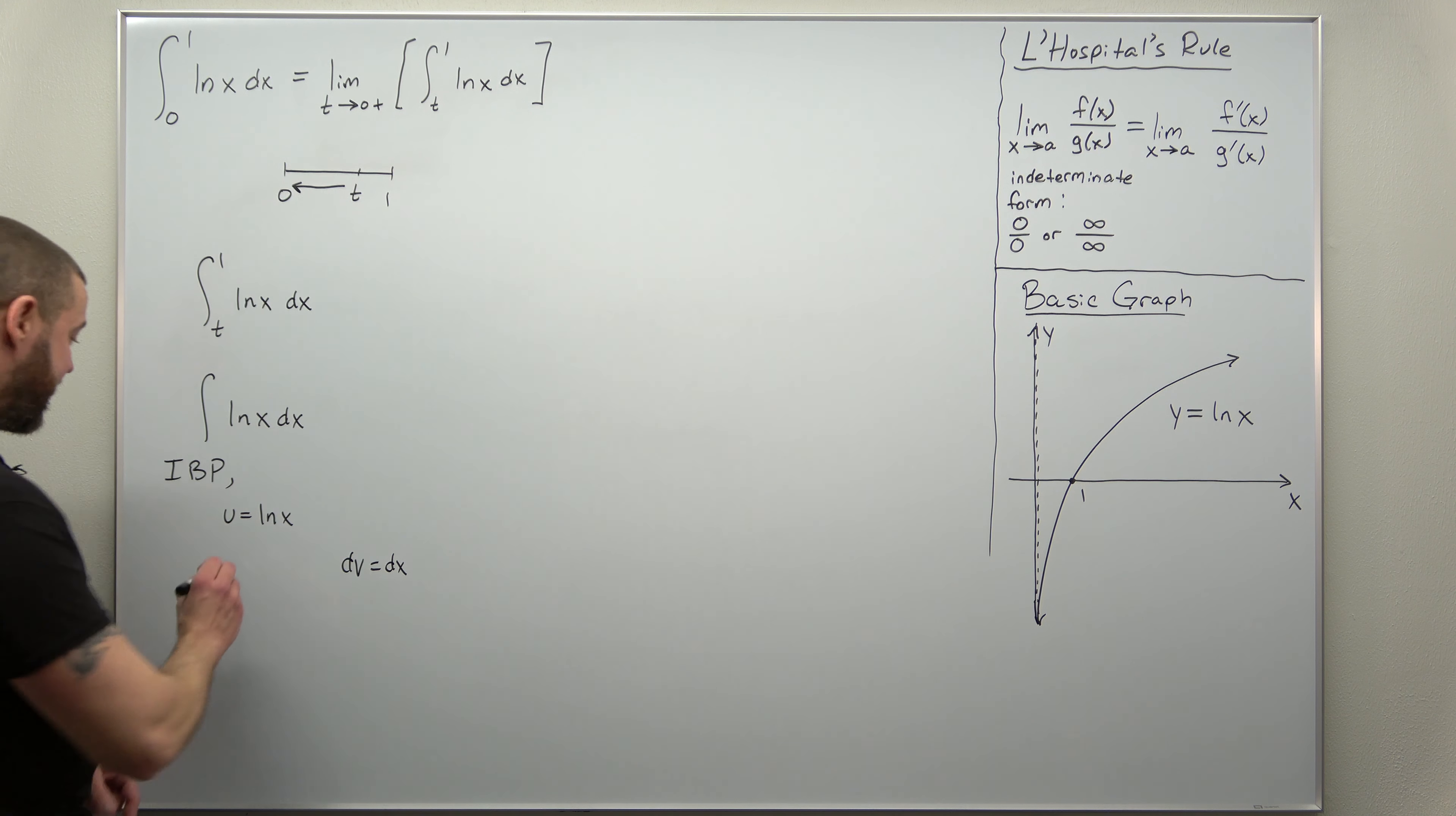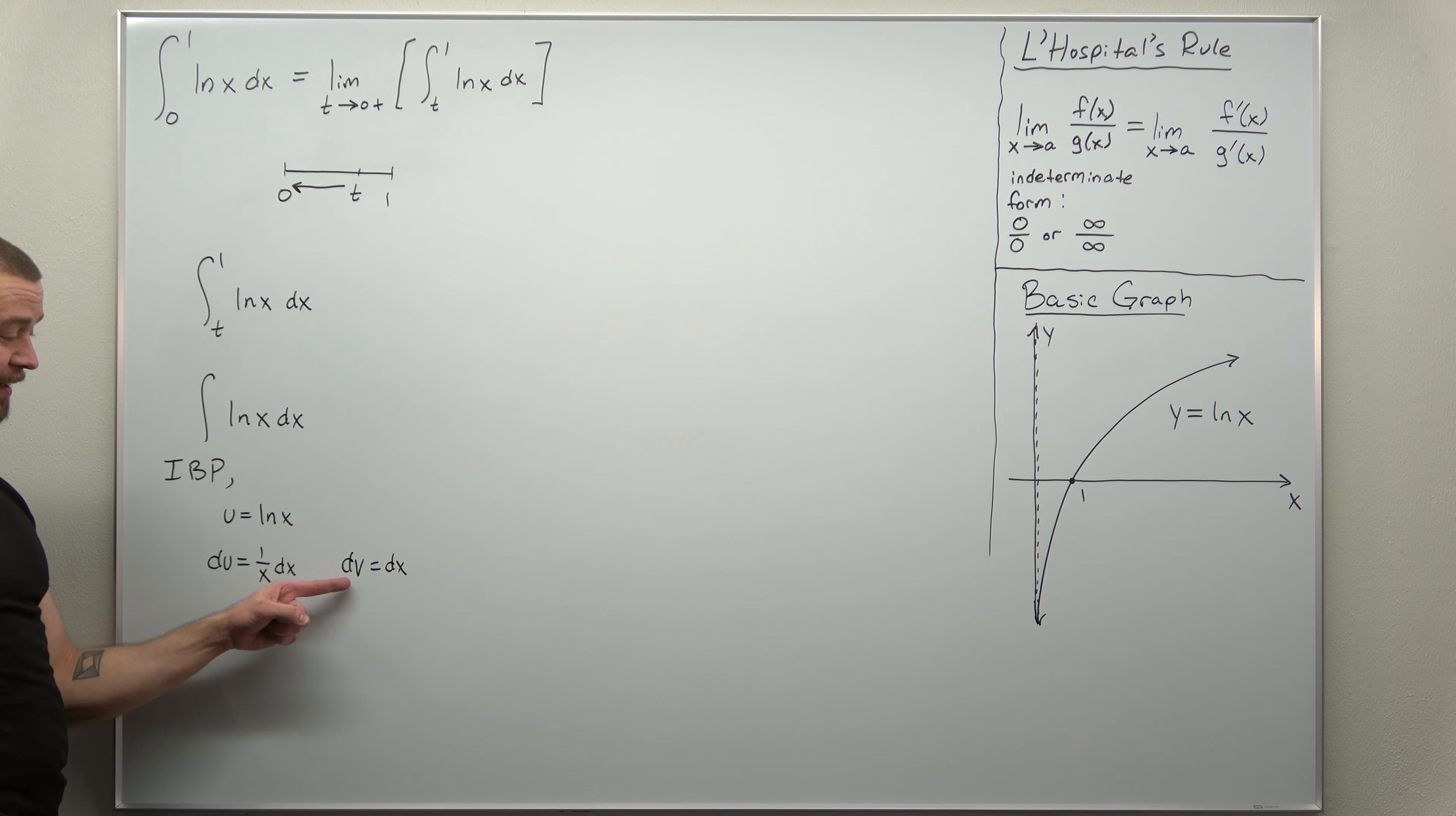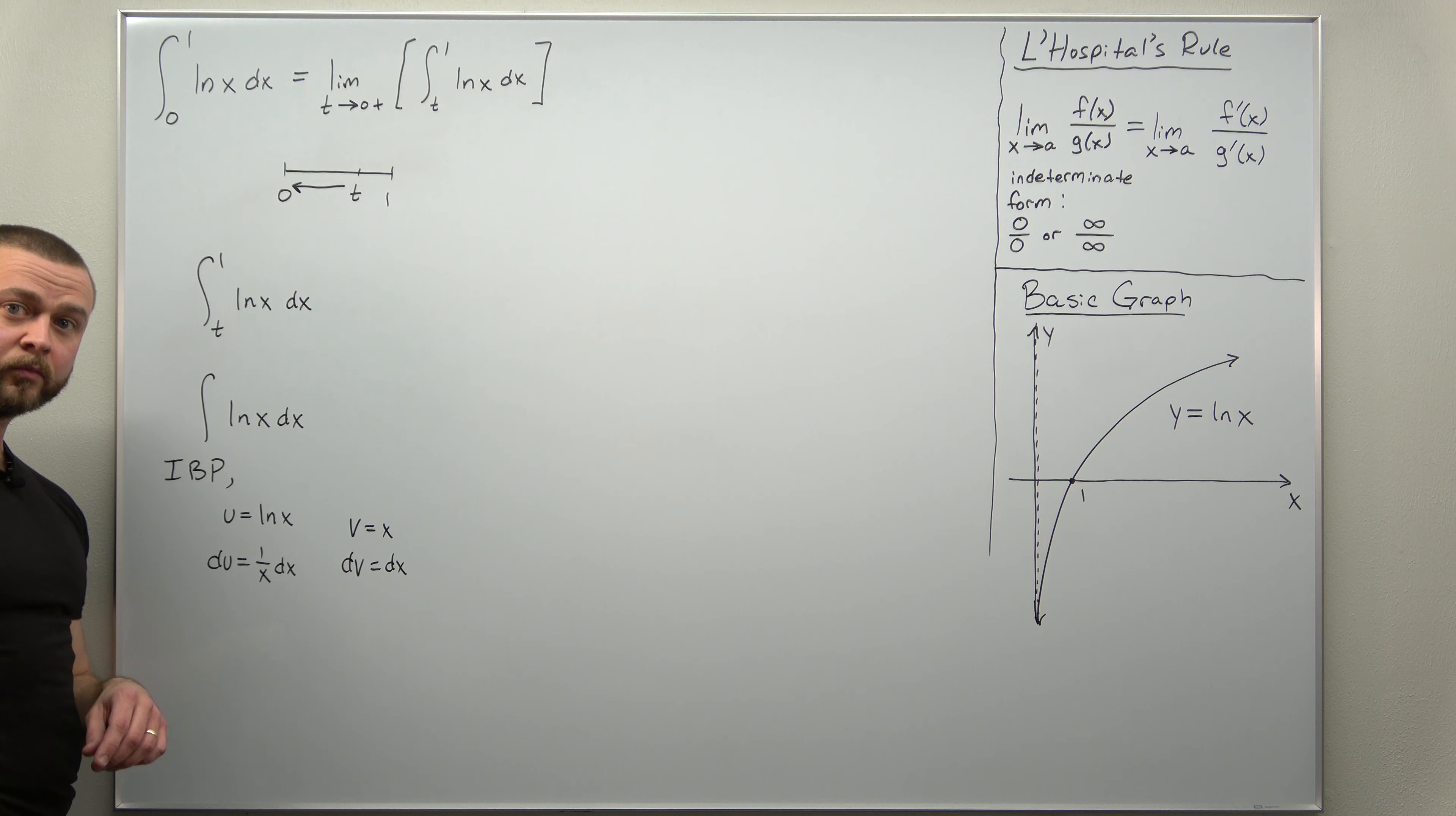You should know the derivative of natural log of x. That's 1 over x dx. At this point in your Calc 2 course, you've used that a lot. And when you integrate dv, think of that as 1 dx. Your antiderivative for 1 will be just x.